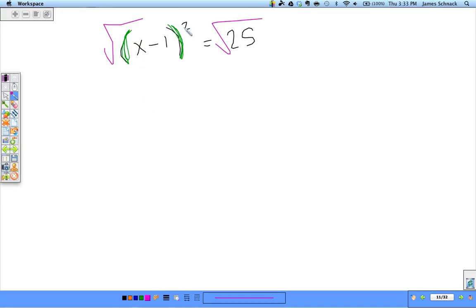When we square root a squared, those cancel each other out. They make each other go away. We're left at x - 1 equals. Now because I square root both sides, I need plus or minus. 25 is a perfect square for 5.